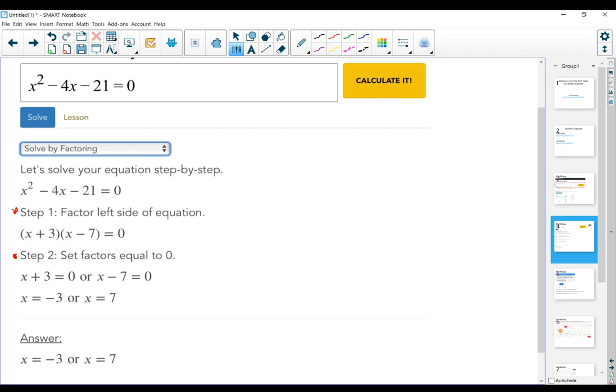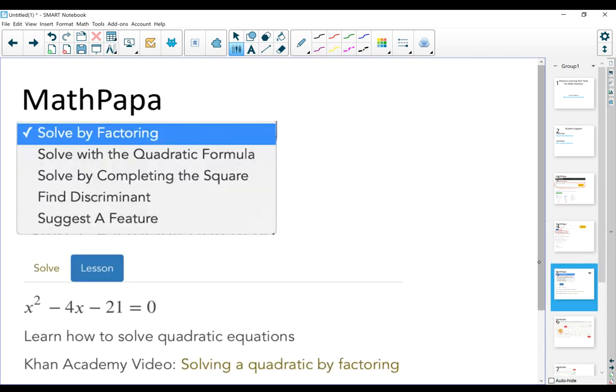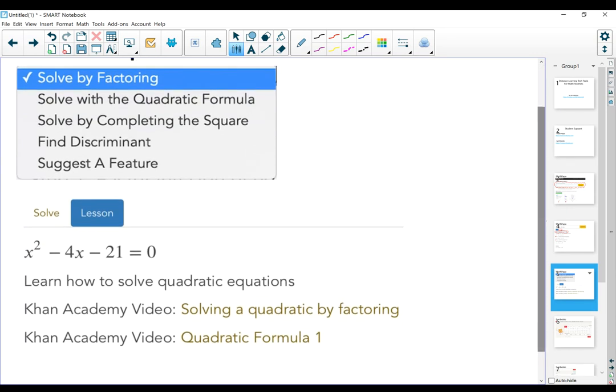The other two things that I want to bring to your attention is that it has this drop-down menu that right now says solve by factoring, because that's how we solve the question, and it also has this tab that says lesson. If you click on the drop-down menu, it's going to show you other ways of doing this question. We solved the equation by factoring, but we could have also done it by quadratic formula, completing the square. We could have found the discriminant or suggest a different feature.